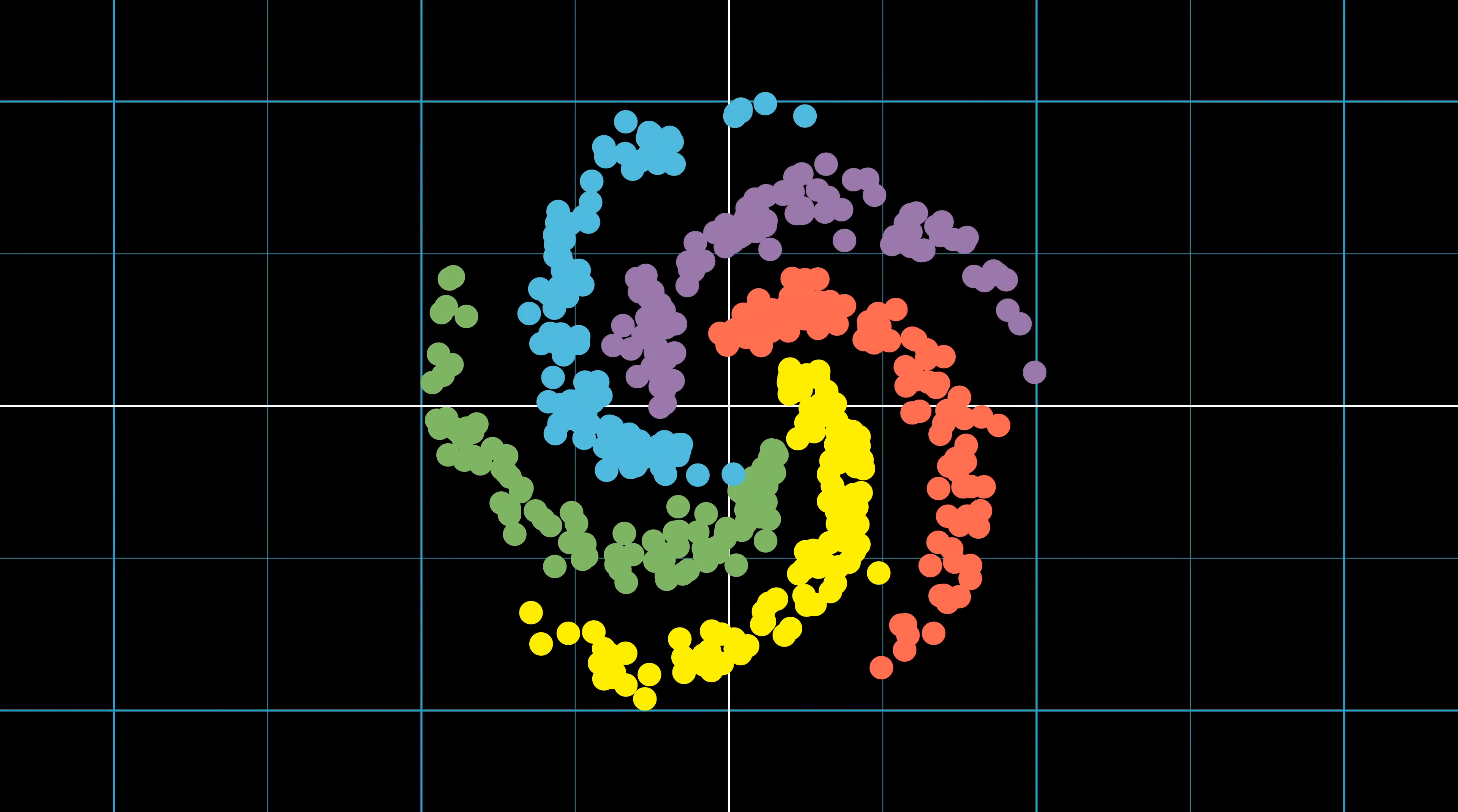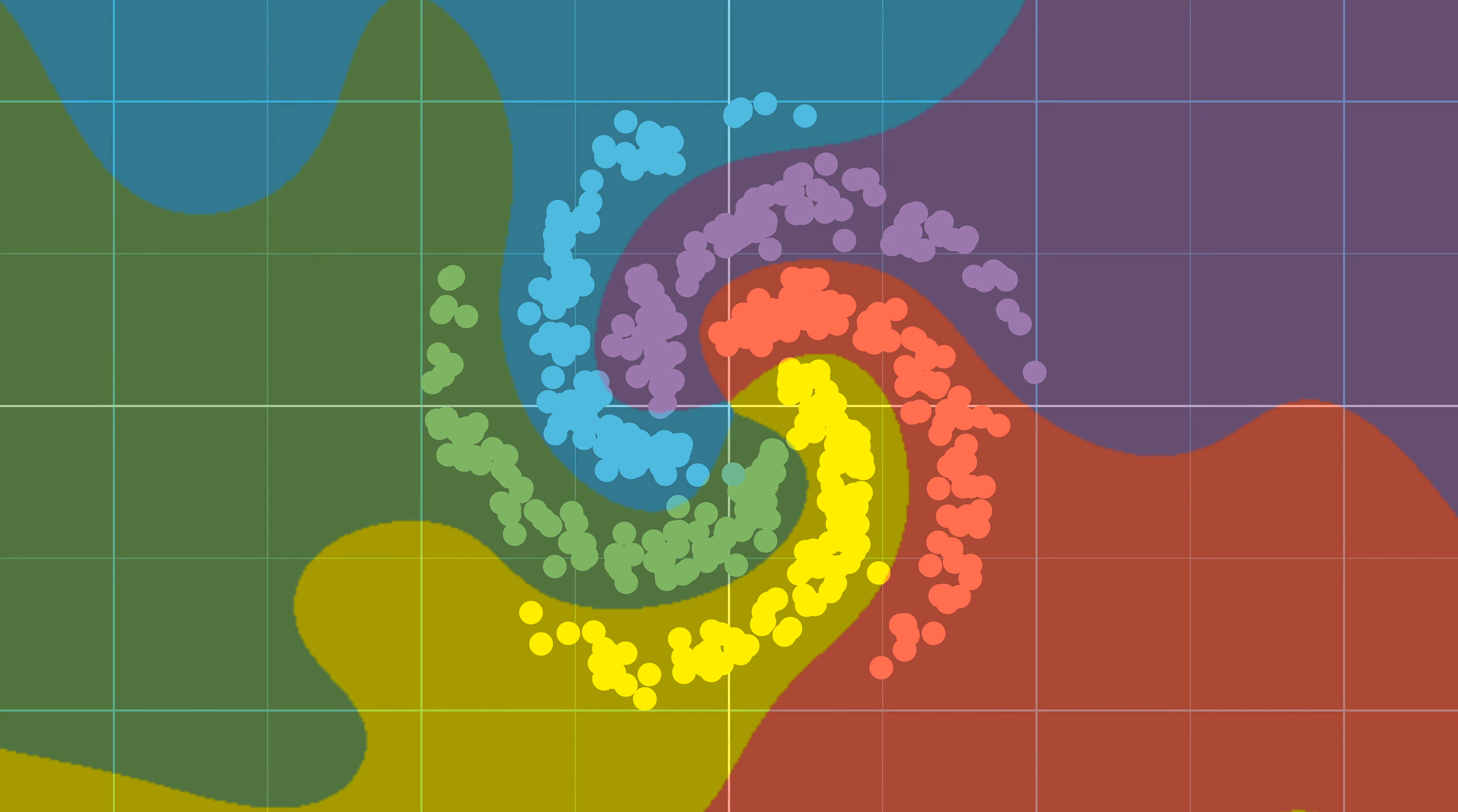If I were to change the activation function to sine of x, we would expect some sort of periodic behavior. And this is the case. Take a look at the decision boundaries for a neural network trained with sine of x as the hidden activation function.